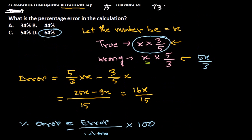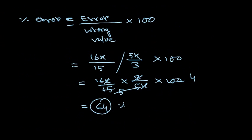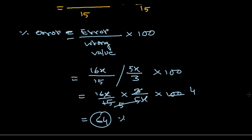The answer is 64, so option C is correct. The take-home message: whatever question is given, construct the basics, set up the equation, assume a variable, get its value, and you're done. That's how you get 64%. Hope that's helpful — thank you!